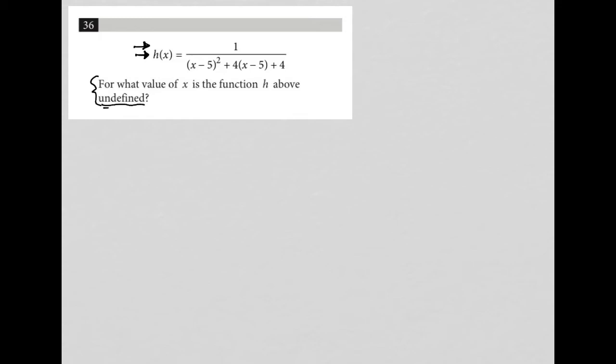And that word undefined is extremely important because h of x is a fraction. In order for a fraction to be undefined, a fraction is undefined when you have this situation - I'll say x over zero because x can be anything equals anything. The numerator can be whatever it wants. It's the denominator being zero that causes the function or the fraction to be undefined.